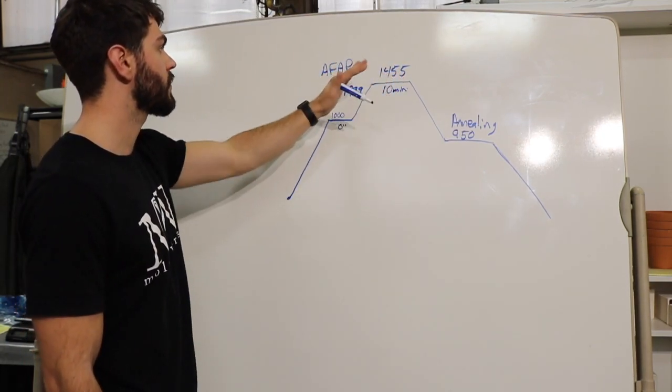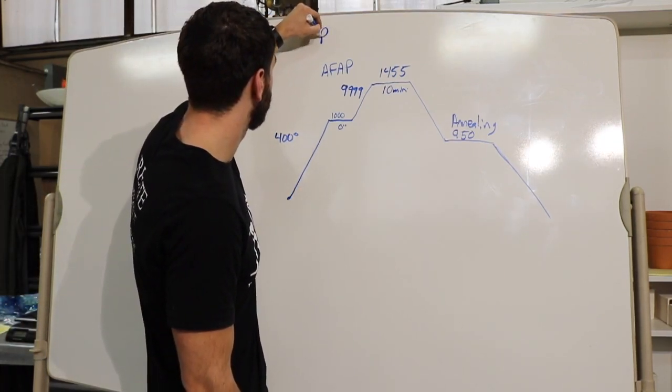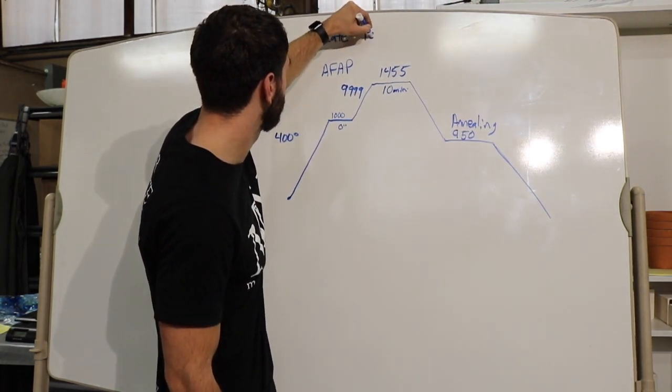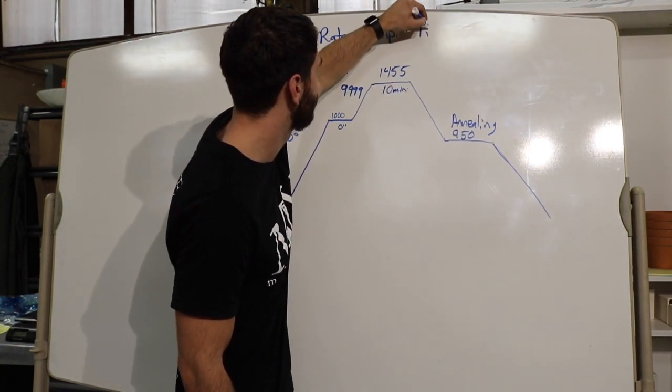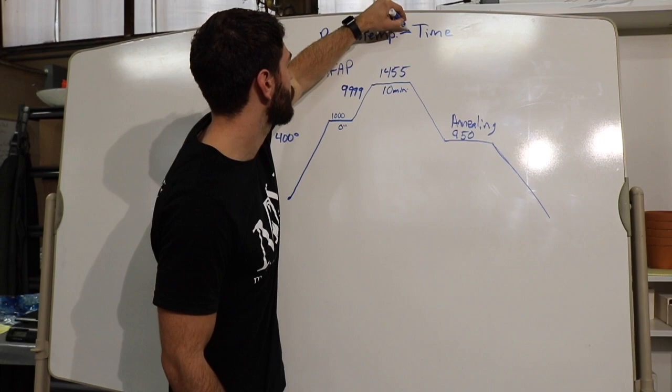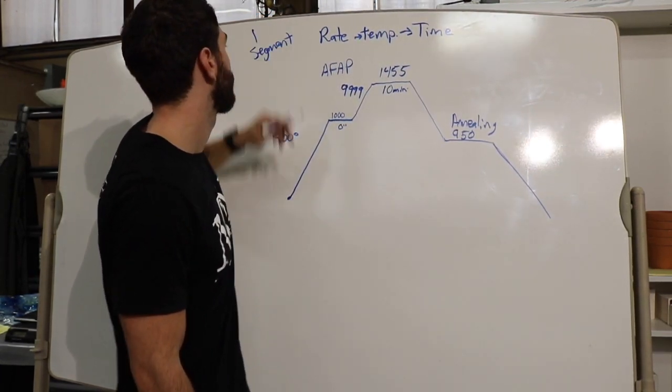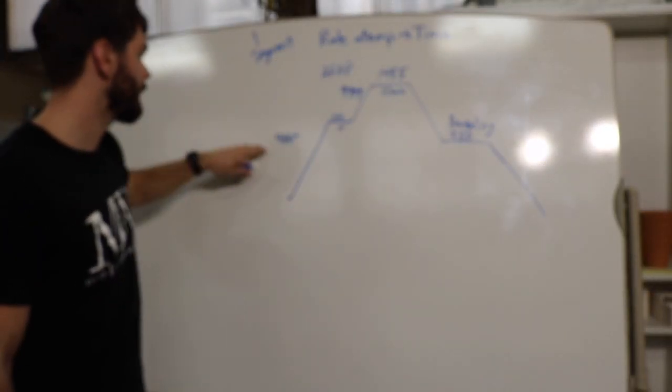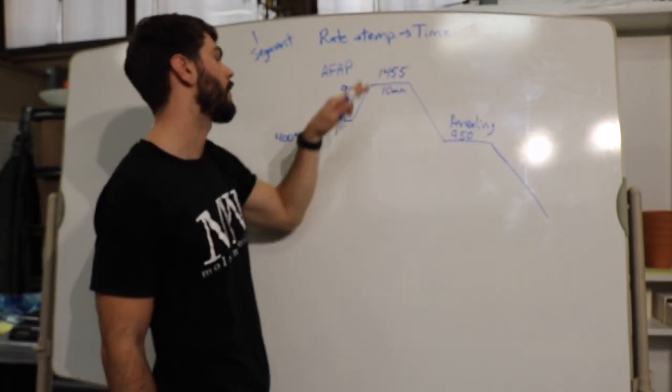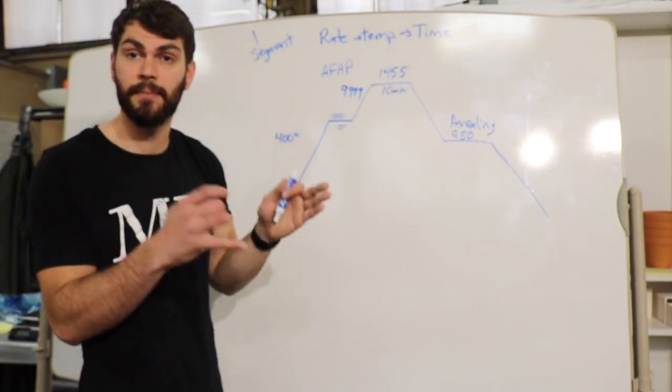Now what we just walked through were two segments. Okay, so a segment is always listed as rate, temperature, and time. Okay, so it's these three things make up one segment. All right, so first the rate is 400 degrees to what temperature? A thousand. And how long do you want to hold it there for? Zero. So that's the process of each segment that you're running.